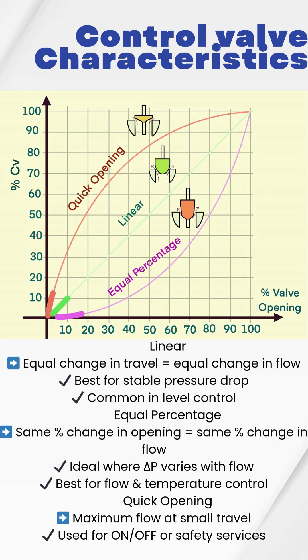Equal percentage characteristic gives equal percentage change in flow for valve travel. This is ideal for flow and temperature loops, where pressure drop varies with flow.